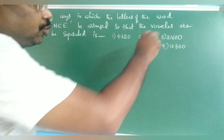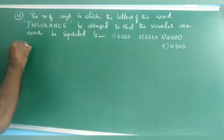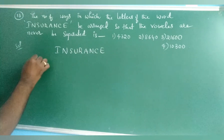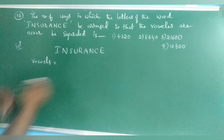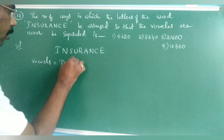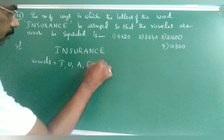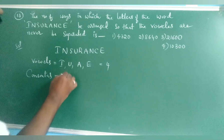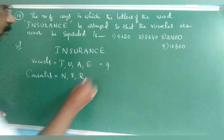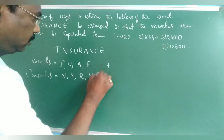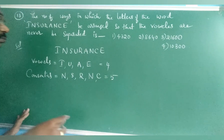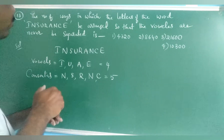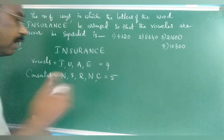Problem 6: Find the number of arrangements of the letters of the word 'insurance' such that the vowels are never separated. The word 'insurance' contains vowels I, U, A, E (4 vowels) and consonants N, S, R, N, C (5 consonants, with 2 N's repeated).